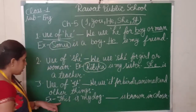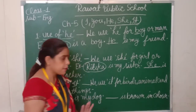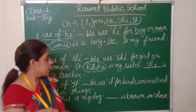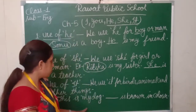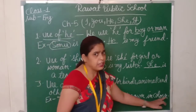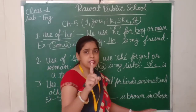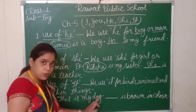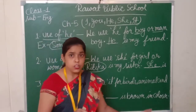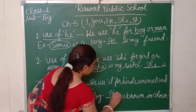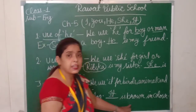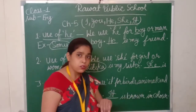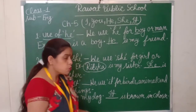Let's see another example. This is my dog. Dog is an animal. So this is my dog — it is brown in color. Here we use it for dog because dog is an animal.